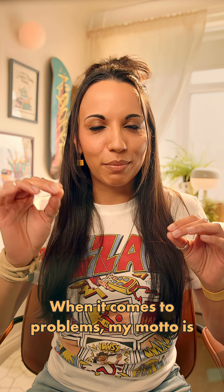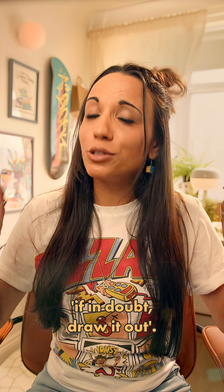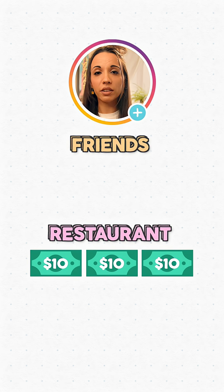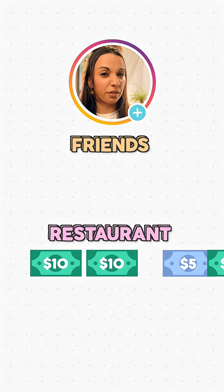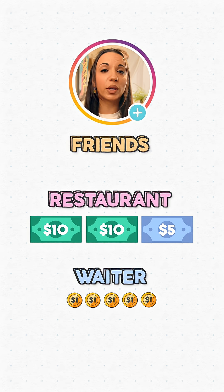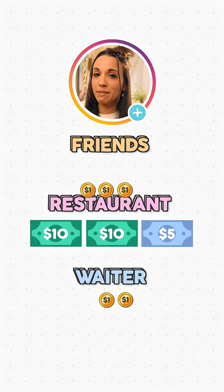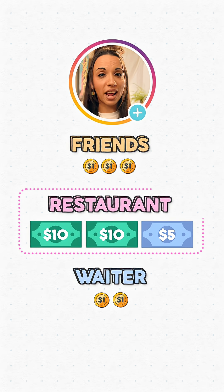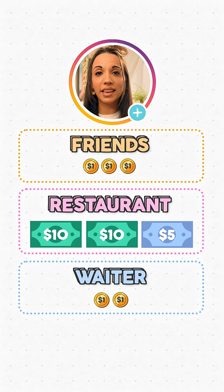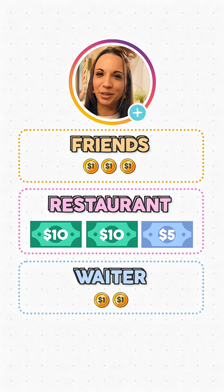When it comes to problems, my motto is: if in doubt, draw it out. Let's follow the money. $30 passes from the friends to the restaurant. Let's change up one of those tens into a five and five ones. The five ones go to the waiter, who keeps two of them and passes three back to the friends. So the restaurant has $25, the waiter has $2, and the three friends have a dollar each, making $30. No missing dollar — they're all accounted for.